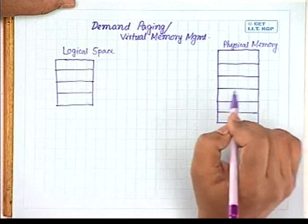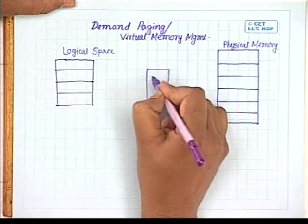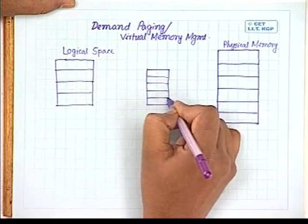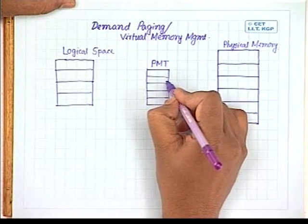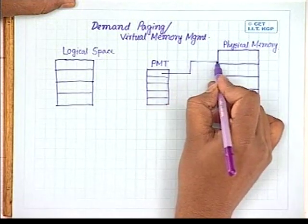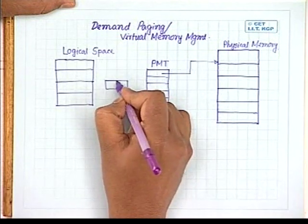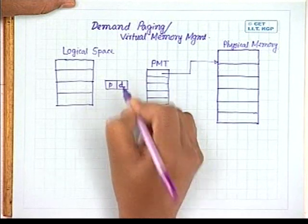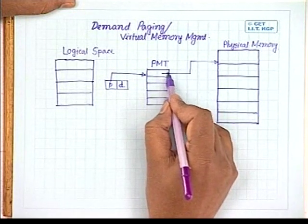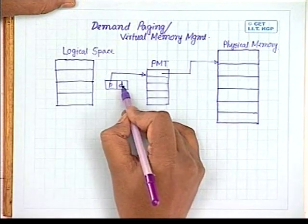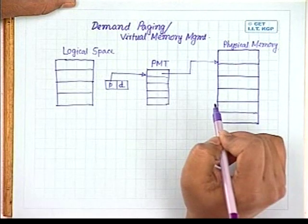In case of demand paging, for every job we have to have a page map table or PMT. This page map table maps page numbers into frame numbers in the main memory. The CPU generates an address in the form of two components: one is the page number, and the other is the offset within the page. Using the page number, you address a particular entry in the PMT; from the PMT you get the frame number, and using that frame number and the offset, you access the physical memory location for reading or writing.